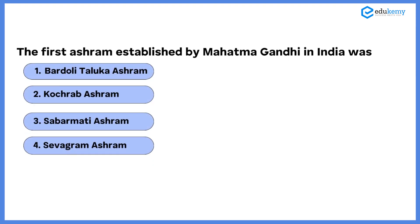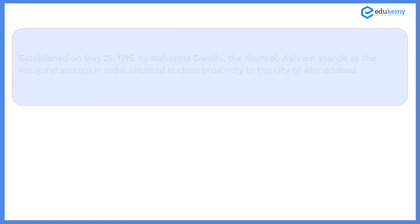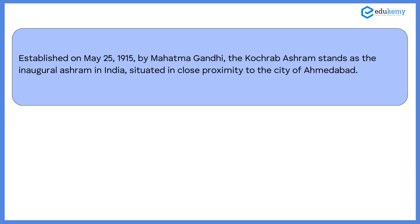The next question asks: the first ashram established by Mahatma Gandhi in India was which one? The given options are: A) Bardoli Taluka Ashram, B) Kochrab Ashram, C) Sabarmati Ashram, D) Sevagram Ashram. The correct answer is the Kochrab Ashram. It was established on May 25, 1915 by Mahatma Gandhi. The Kochrab Ashram stands as the inaugural ashram in India, situated in close proximity to the city of Ahmedabad. This was the first ashram Gandhi established after coming to India.